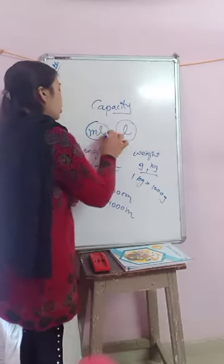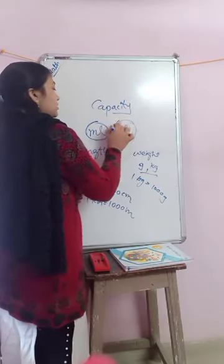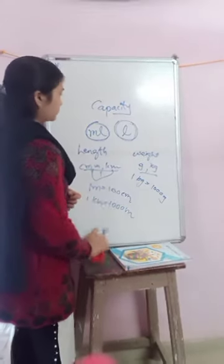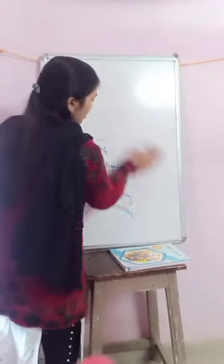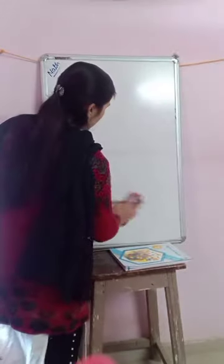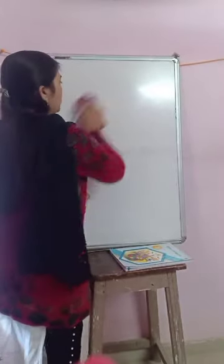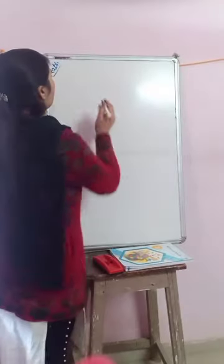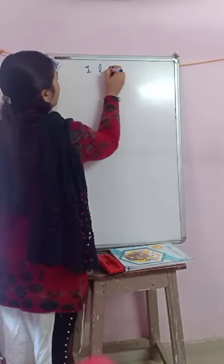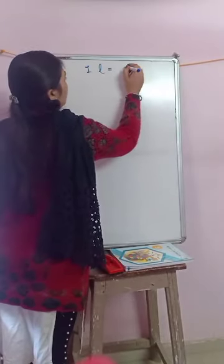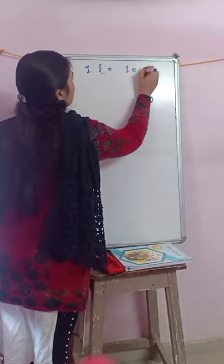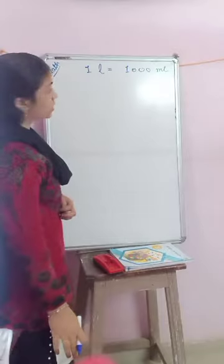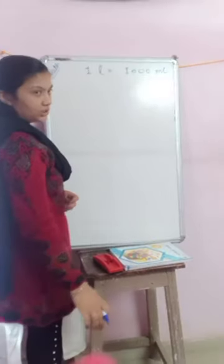Same process we have to follow for the capacity units: milliliter and liter. One liter equals one thousand milliliters. This is the relation between liter and milliliter.